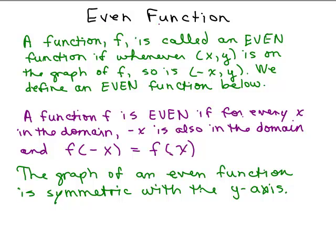We're going to be discussing even functions. A function F is called an even function if whenever the ordered pair (X, Y) is on the graph of F, so is (-X, Y). So if you have some X coordinate with some Y value, there's also the opposite of that X coordinate — if you have (2, 3), you'll also have (-2, 3), for instance. This is how we define an even function.